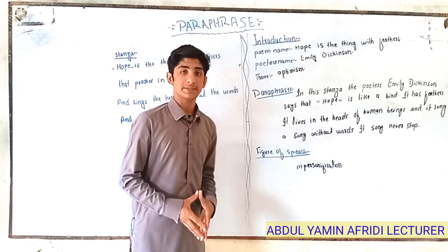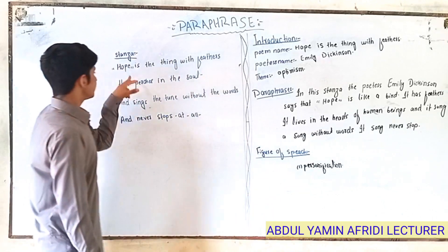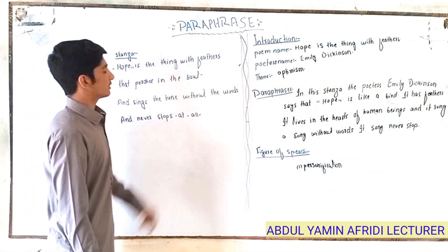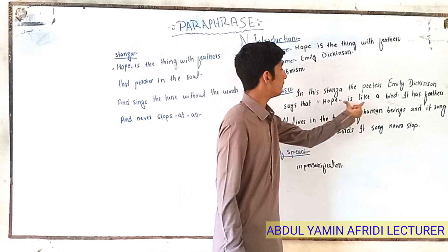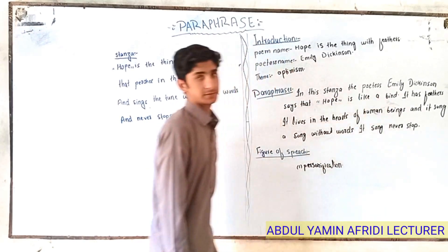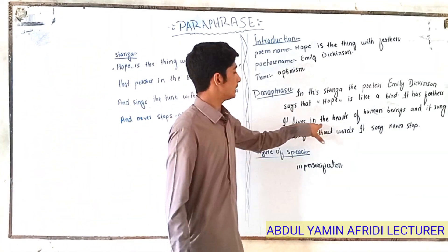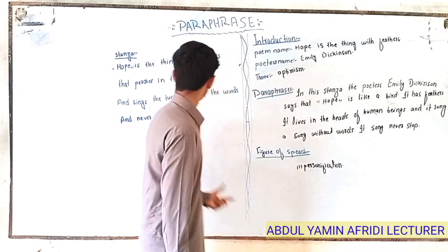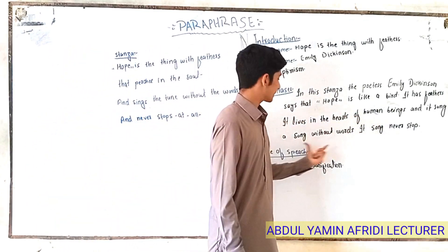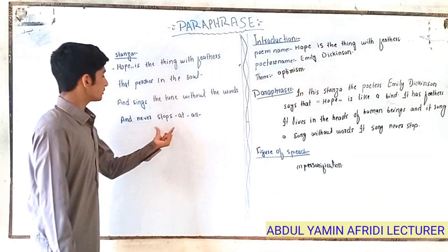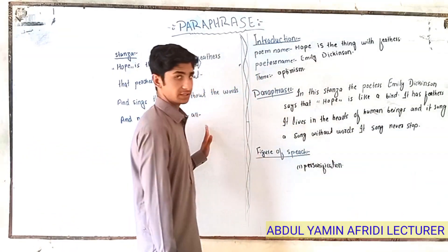After the introduction, we write the paraphrase of this stanza. We write this stanza in all words. The stanza tells us 'Hope is the thing with feathers,' so we can write: in this stanza, the poet Emily Dickinson says that hope is like a bird with feathers. That part 'perches in the soul' says that it lives in the heart of human beings. And 'sings the tune without the words and never stops at all' — we can write: it sings a song without words and never stops.